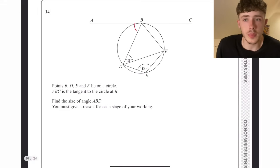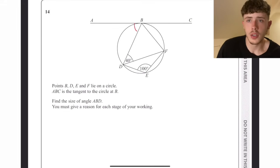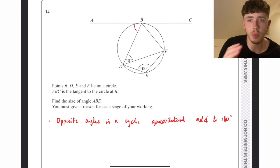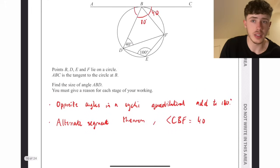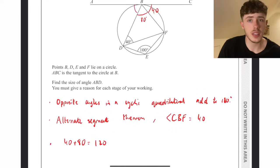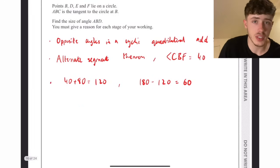Question number 14, we have some circle theorems going on here, and it's quite a complicated one I must admit. One thing I noticed straight away was we have a cyclic quadrilateral, so BDEF has all its corners on the circumference of the circle. Opposite angles in a cyclic quadrilateral add up to 180, so the other one is 80. Using the alternate segment theorem, angle CBF is going to be 40 as well, and then we add them up, take them away from 180, and we get our answer of 60.